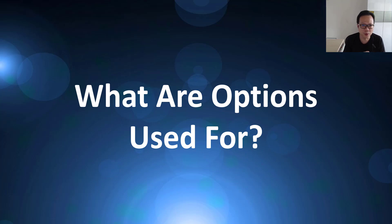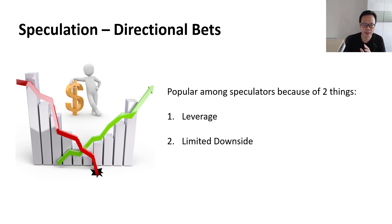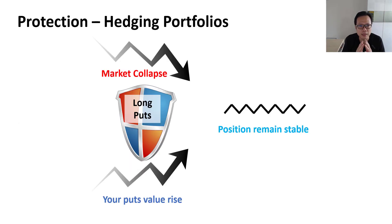What are options used for? Options are very popular among speculators who want to bet on the direction of share prices. You could buy or short shares directly, but options offer attractive advantages. The first is leverage — you only pay the premium, which is usually a small fraction of the value of the shares you're exposed to. The second advantage is that your upside is potentially much higher than your downside, because if your bet turns ugly your loss is limited only to the premium you paid.